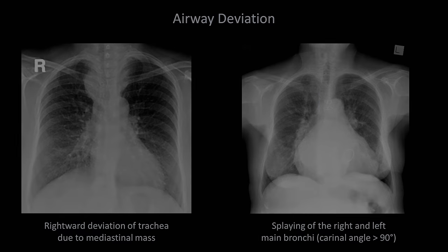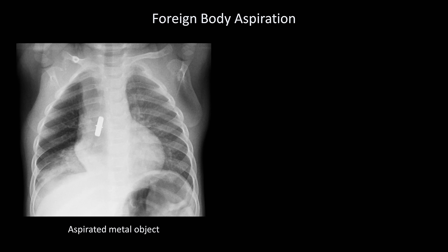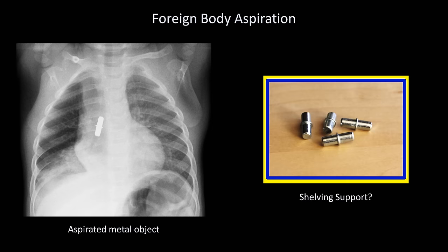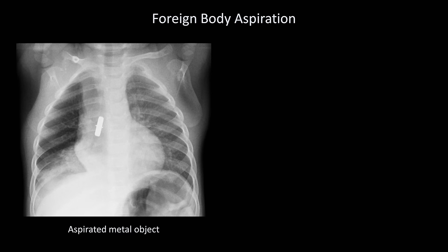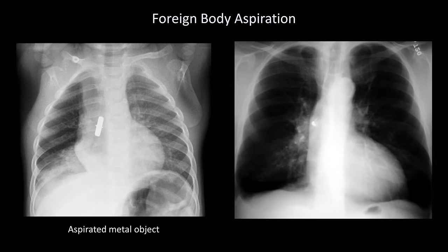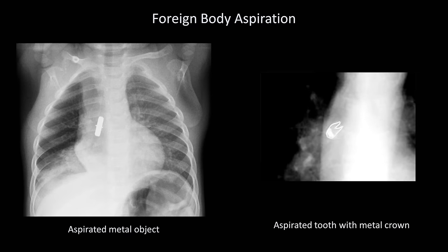The final class of possible airway abnormality is a foreign body. Here is an x-ray of a toddler who presented with wheezing and shortness of breath — there appears to be something lodged in the right main bronchus, looking suspiciously like a shelving support from a ready-to-assemble furniture brand. And lest you think only children aspirate foreign objects, take a look at this adult example: something small and dense in the right main bronchus, which when zoomed in turns out to be a tooth with a metal crown.